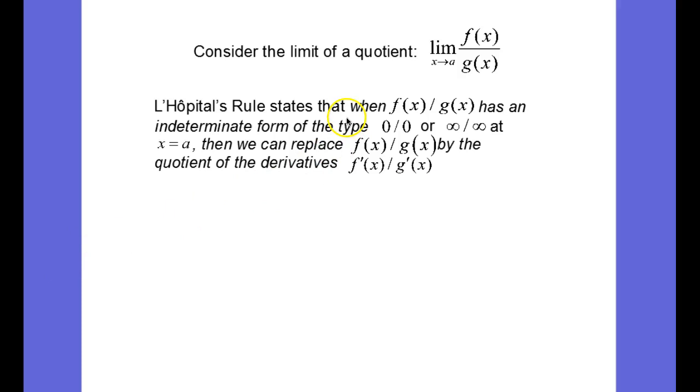A limit quotient of f(x) over g(x) as x approaches a. And what L'Hopital's rule states is that when f(x) over g(x) has one of the two indeterminate forms of the type 0 over 0 or infinity over infinity at x equals a...